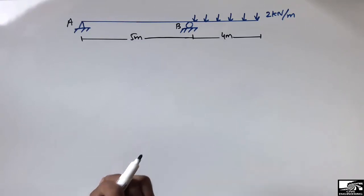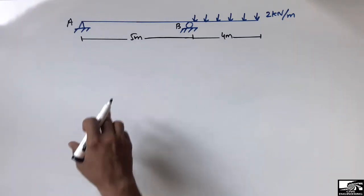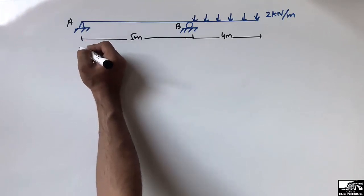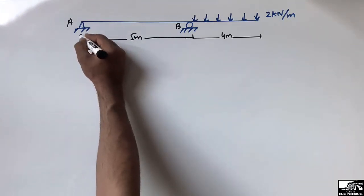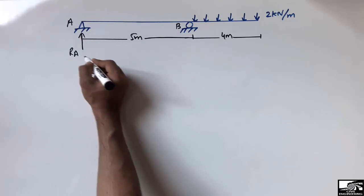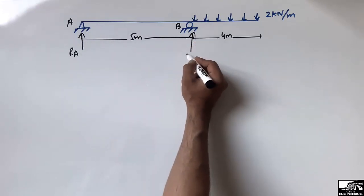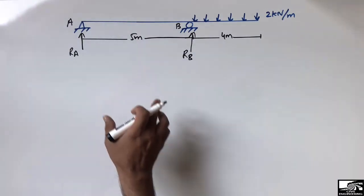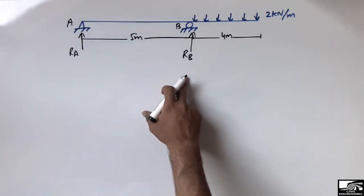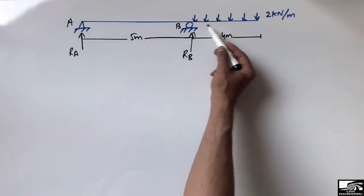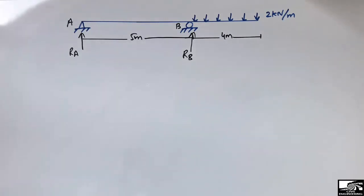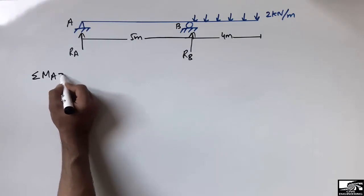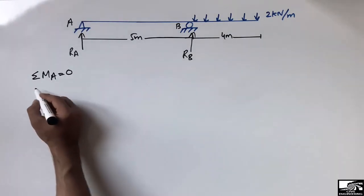To draw the shear force and bending moment diagram, we first have to find the support reactions. Let's call them RA and RB, and suppose both support reactions are acting in the upward direction. The load is acting only on the hanging portion. To find the support reactions, I will take the summation of moments at point A equal to zero.